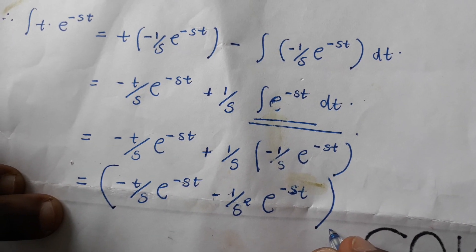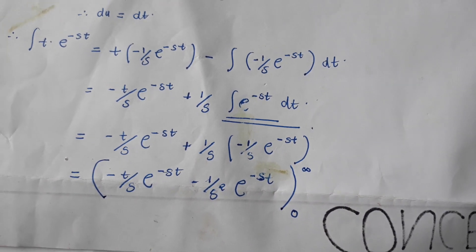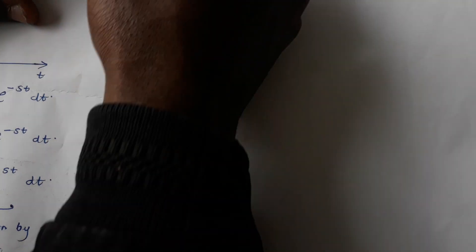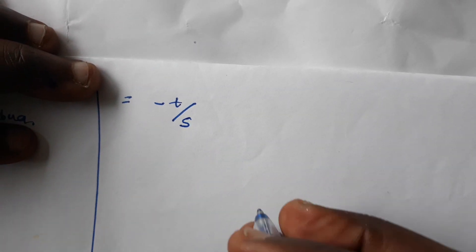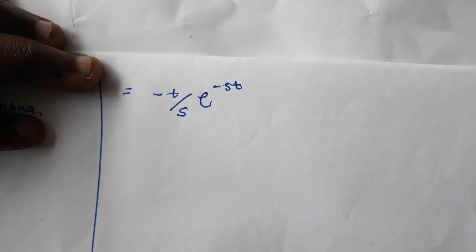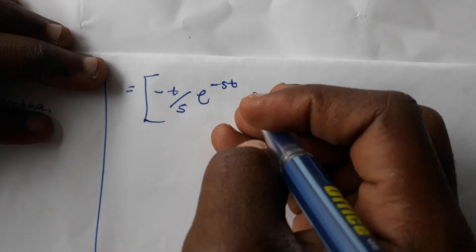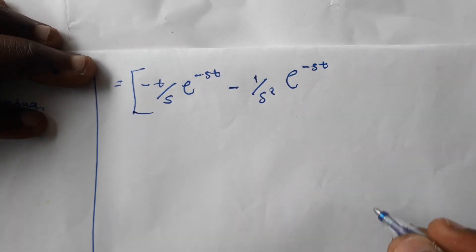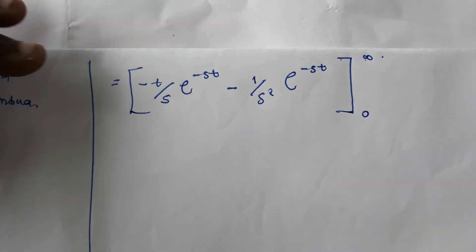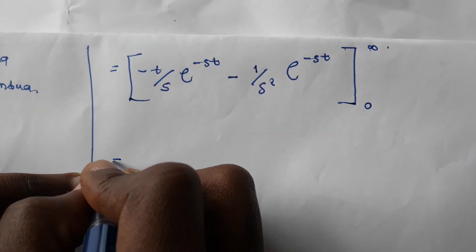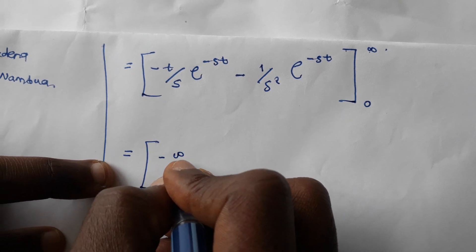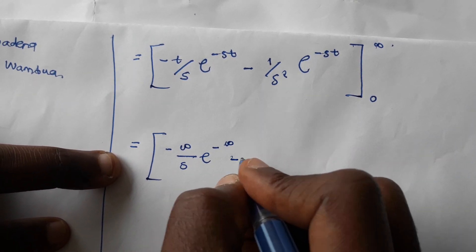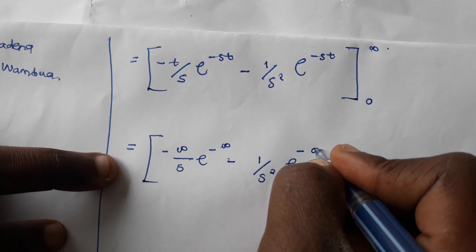So applying the limits from 0 to infinity, we have the expression: minus t over s times e^(−st) minus 1 over s² times e^(−st), evaluated from 0 to infinity. Substituting the upper limit, we get: minus infinity over s times e^(−∞) minus 1 over s² times e^(−∞). Then subtracting the lower limit: minus [0 over s times e^0 minus 1 over s² times e^0].